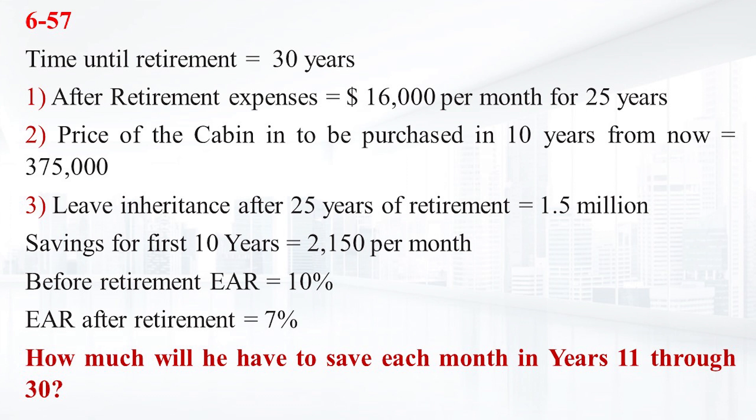The cash flow for this question occurs monthly and the interest rate given is the EAR. Since the cash flows occur monthly, we must calculate the effective monthly rate. We will calculate APR based on monthly compounding and then divide by 12. This conversion can be made using this formula.